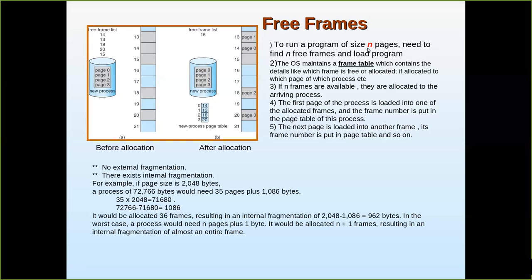To run a program of size n pages, n free frames are needed in order to load and run it. If there are four pages but only three frames are available, this process has to wait until the required number of frames becomes available. If n frames are available, they are allocated to the arriving process. The first page is loaded into one of the allocated frames and the frame number is put in the page table of this process.